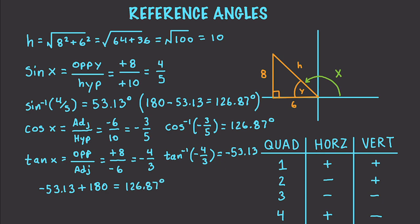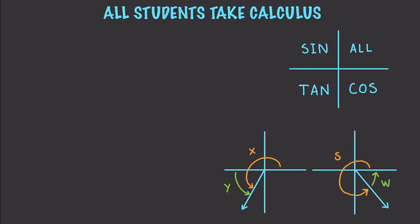In situations where you're dealing with radians, you're going to add or subtract pi instead of 180. This brings us to the mnemonic: All Students Take Calculus. The different trig functions are positive in the different quadrants depending on where the ray is. Everything is positive in quadrant 1. In quadrant 2, just sines. In quadrant 3, tangents. And in quadrant 4, cosines.